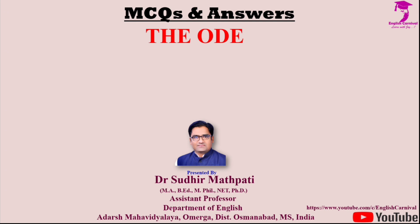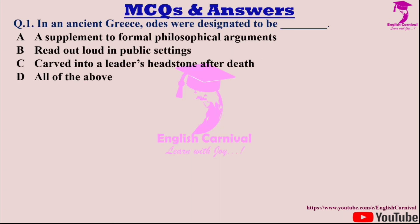Question one: In ancient Greece, odes were designated to be — dash. Options are A: A supplement to formal philosophical arguments; B: Read out loud in public settings; C: Carved into a leader's headstone after death; and D: All of the above. Correct answer is B — read out loud in public settings.